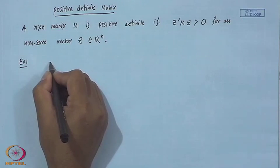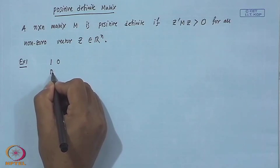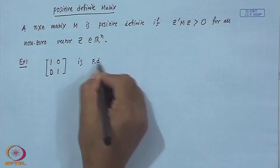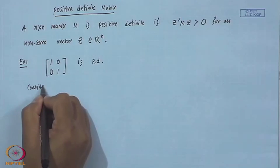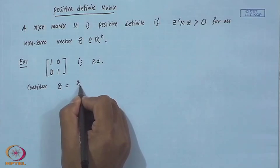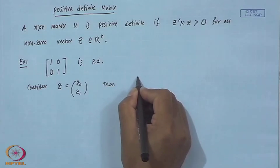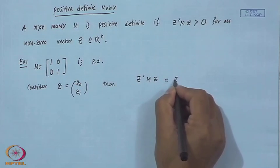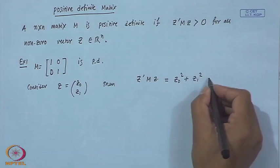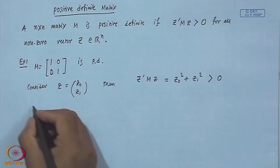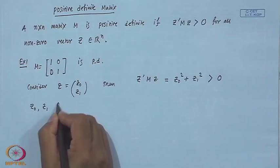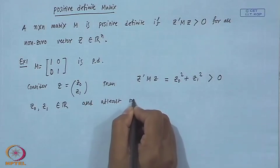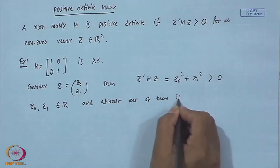Example 1: Consider the identity matrix I₂ = [[1,0],[0,1]]. This matrix is positive definite because if you take z = [z₀, z₁], then z'Mz = z₀² + z₁², which is strictly greater than 0 since z₀ and z₁ are real and at least one of them is non-zero. Similarly, you can prove that the identity matrix Iₙ of order n is also positive definite.